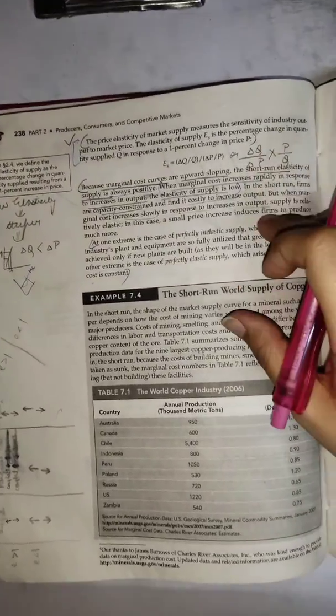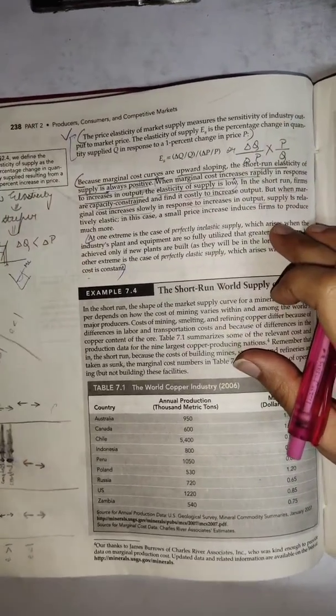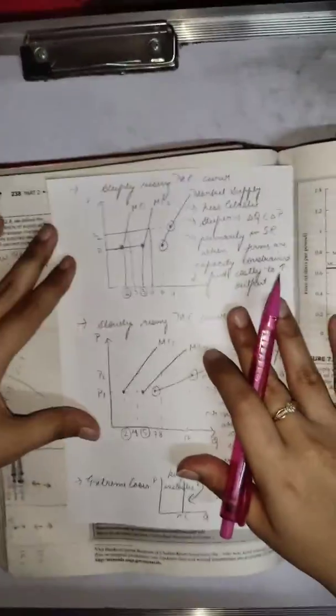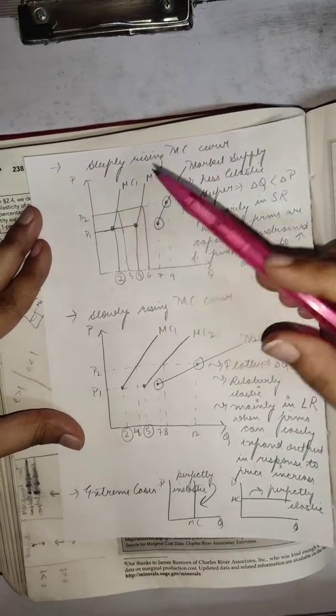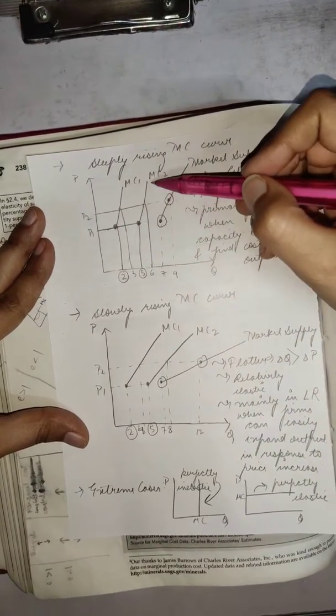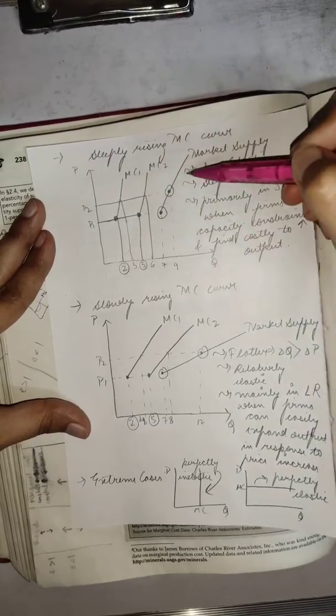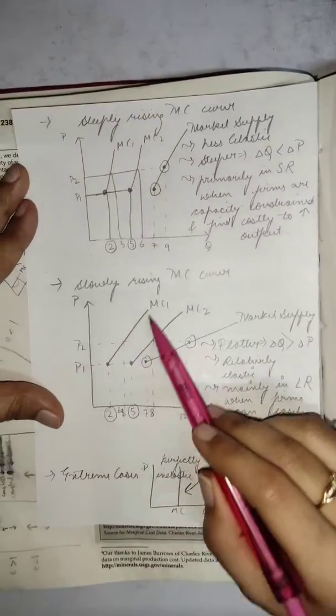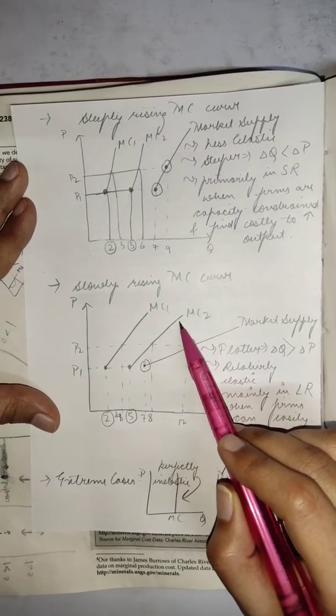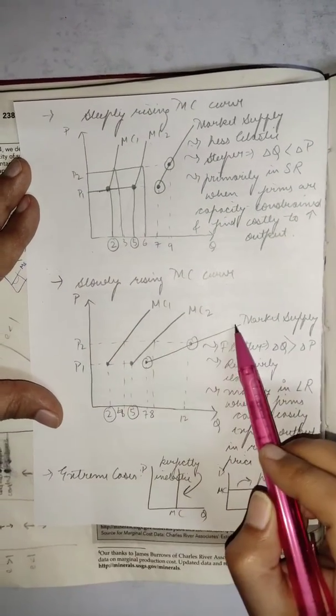After that this is actually given two cases which I have made separately for you. One case is of a steeply rising marginal cost curve. Basically when your firms have steep marginal cost curves, what will happen to the market supply then? And when the firms will have slowly rising marginal cost curves then what will happen to the market supply?